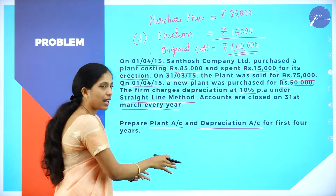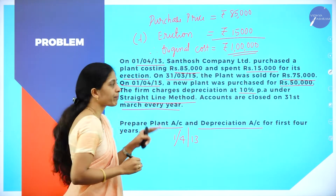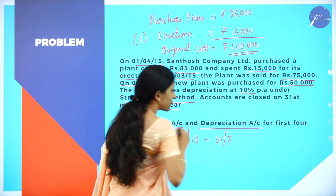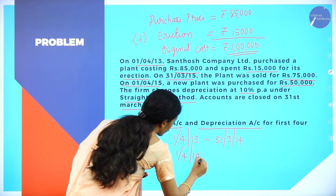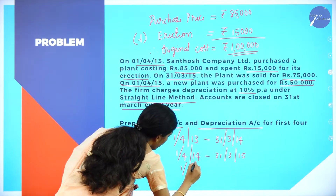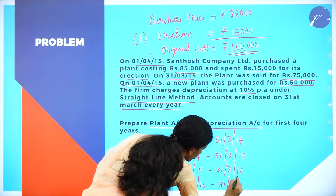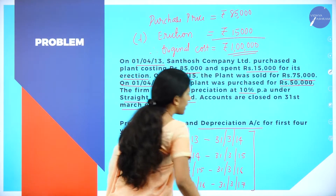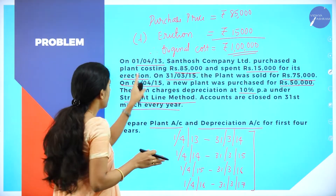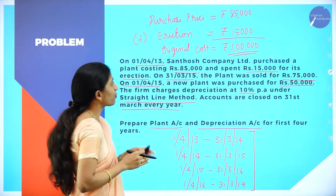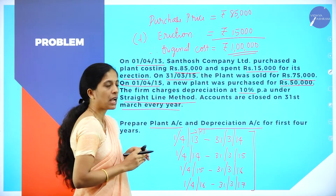We have to prepare a table of dates for the first four years. Starting from 1-4-2013, the year endings are: 31st March 2014, 31st March 2015, 31st March 2016, and 31st March 2017. On 1-4-2013, the company purchased Plant 1 for rupees 1 lakh (that is 85,000 plus 15,000).